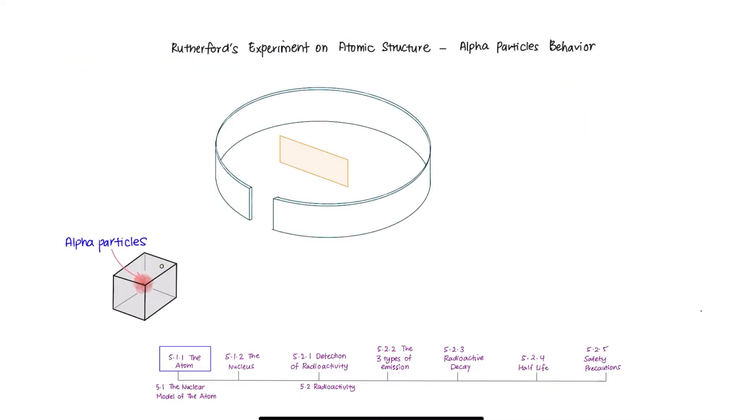Alpha particles were stored in a lead box and had a small hole for them to shoot out in a straight line. Now, why alpha particles are used here?